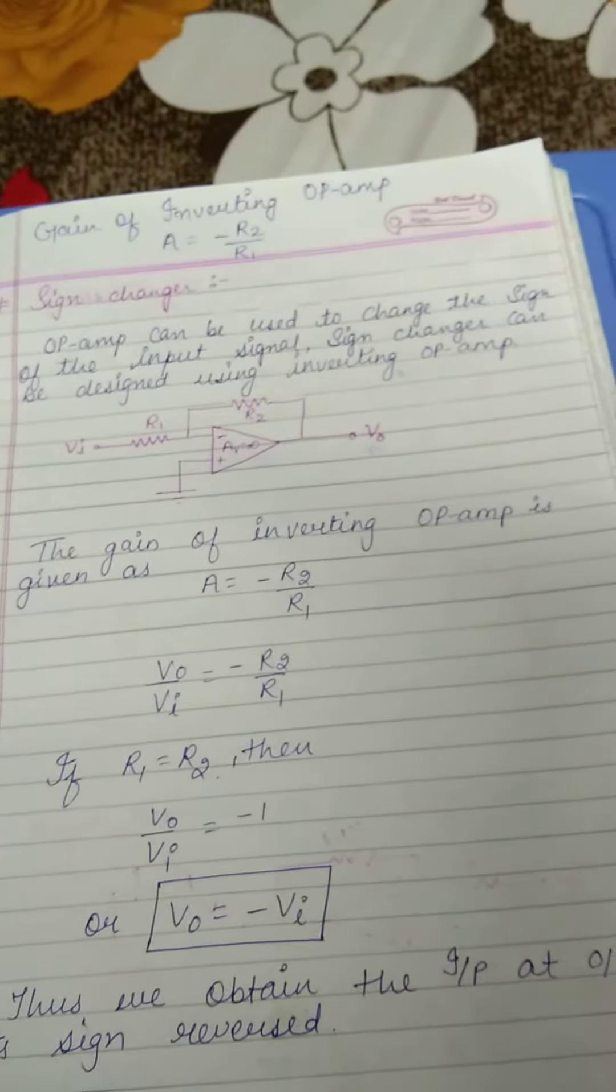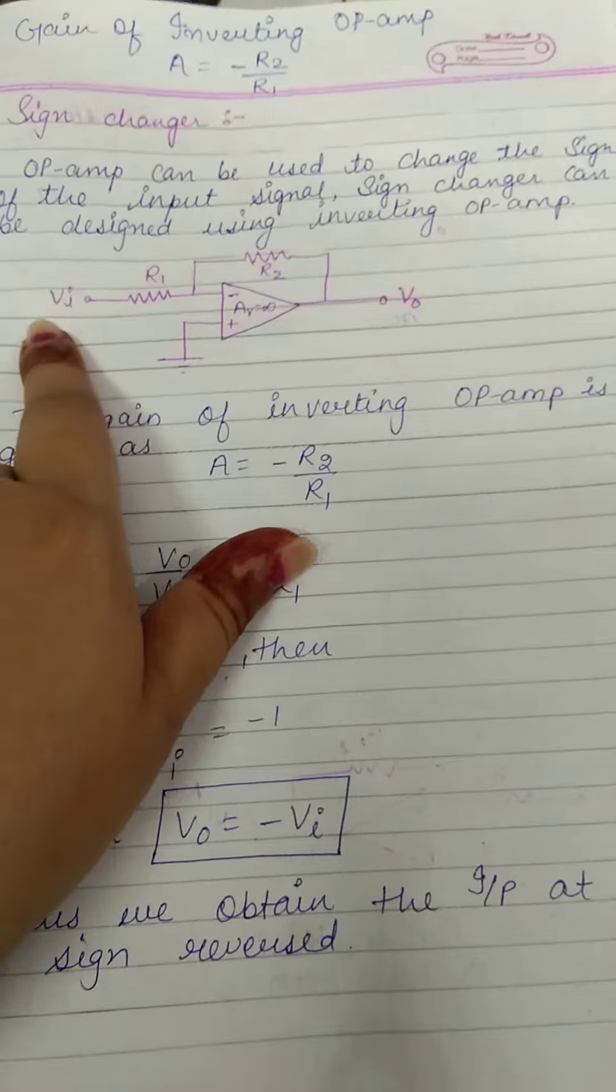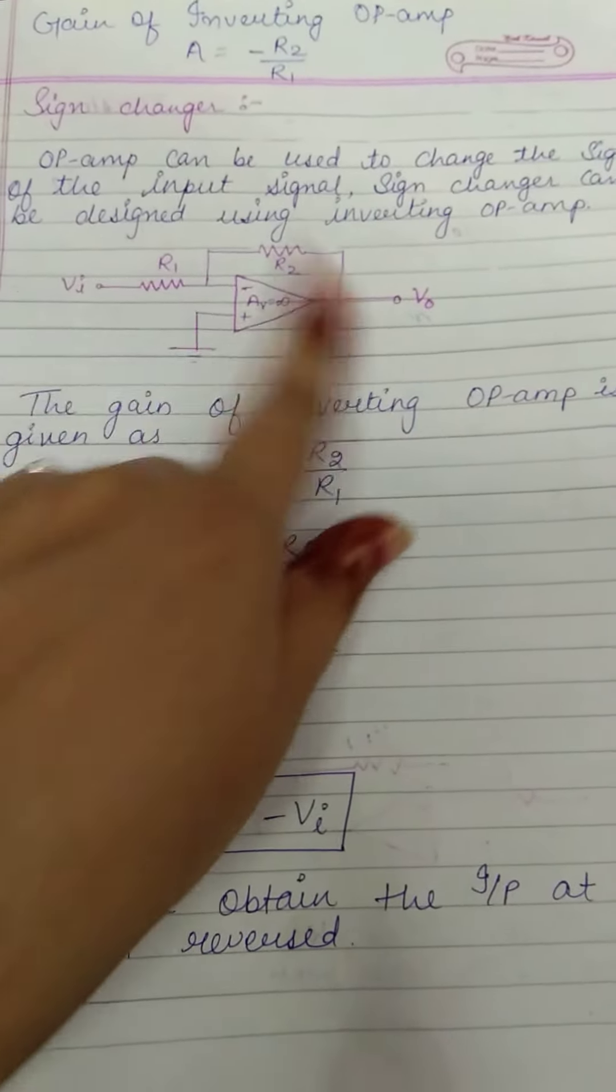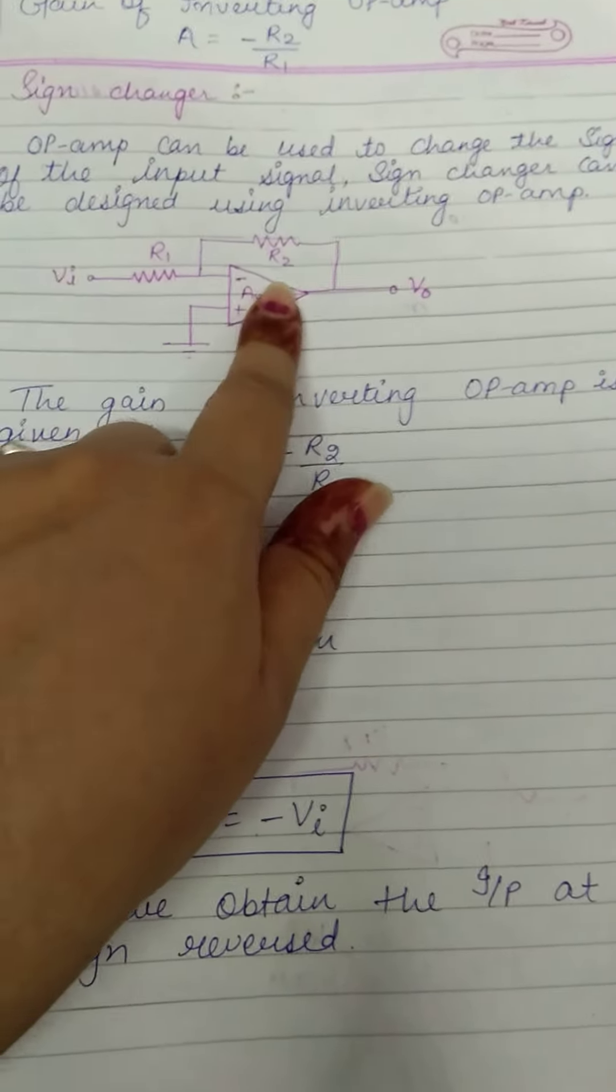Inverting op-amp can be used for sign changer. We have input in the inverting terminal, same circuit, same R1 input resistance, R2 feedback, which is negative feedback.